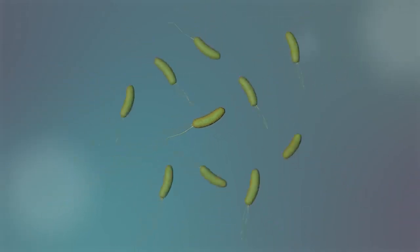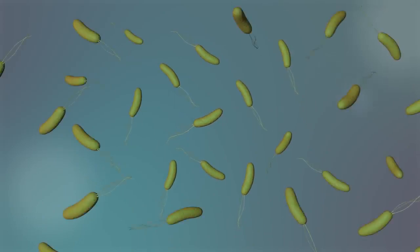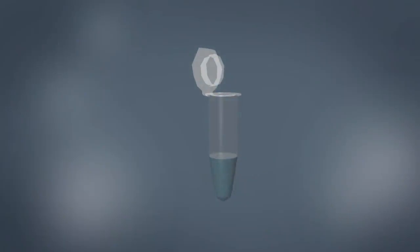This makes it possible to produce lots and lots of copies of it as the bacterial cells multiply. The DNA is then isolated from the bacteria and sent for sequencing.